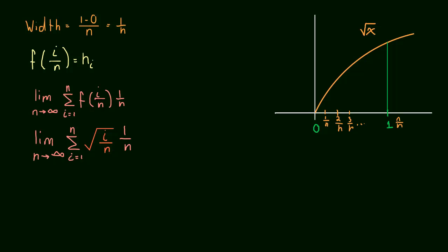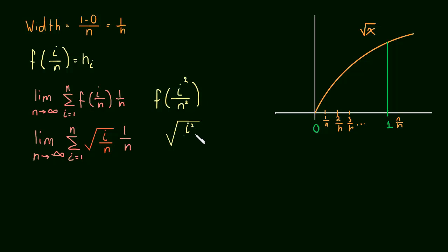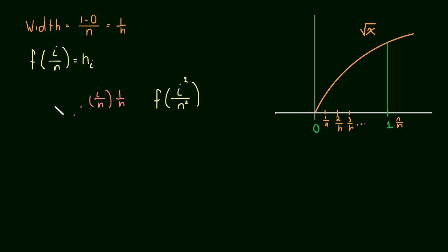So we have to rethink what we're going to do. The problem came because we had to plug in i over n into the square root of x. So maybe what we'd rather do is plug in something like i squared over n squared into the square root of x. Since i squared over n squared is a perfect square, the square root simplifies really easily. So why don't we try rethinking this problem with that in mind? We're shooting for f of i squared over n squared.